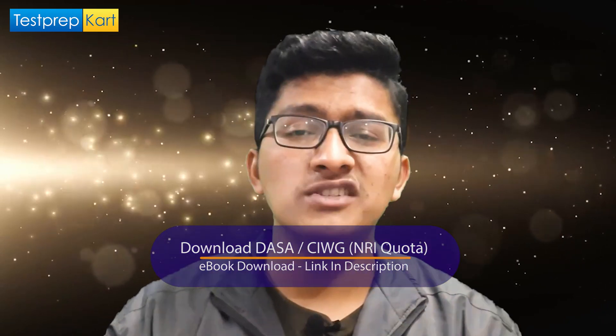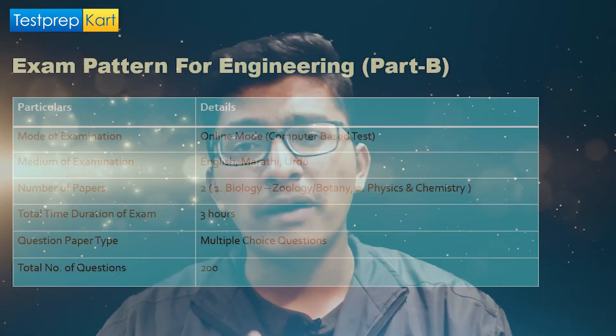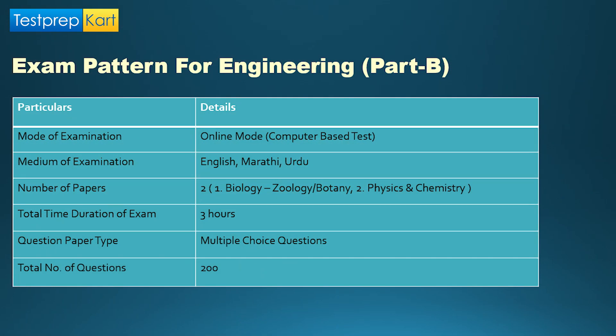The second group is PCB — Physics, Chemistry, Biology — which is generally for pharma courses. Biology is divided into two sections: Botany and Zoology, each containing 50 questions, making the first paper 100 questions total with one mark each, and one and a half hours to solve it. The second paper is Physics and Chemistry combined, with 50 questions each, totaling 100 marks. So the PCB group paper is also 200 marks total, with no negative marking.